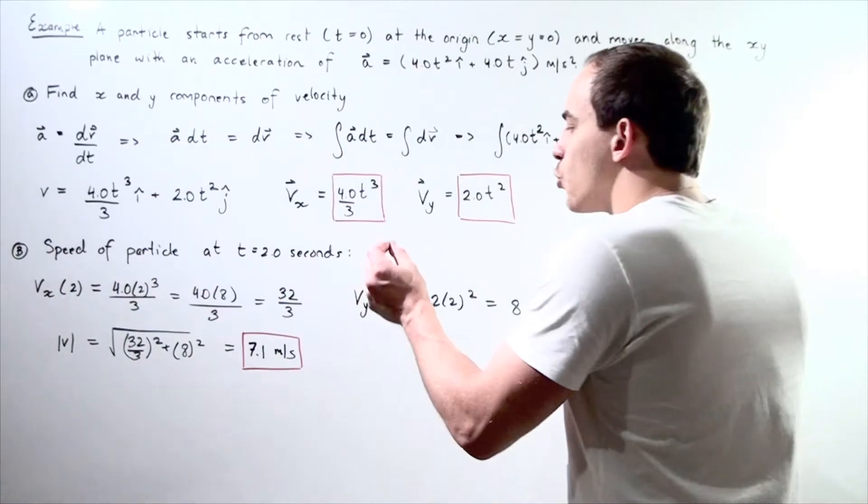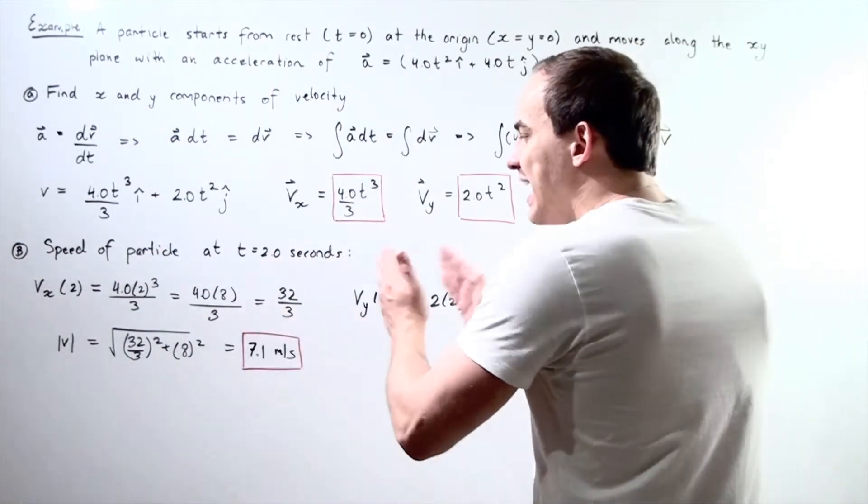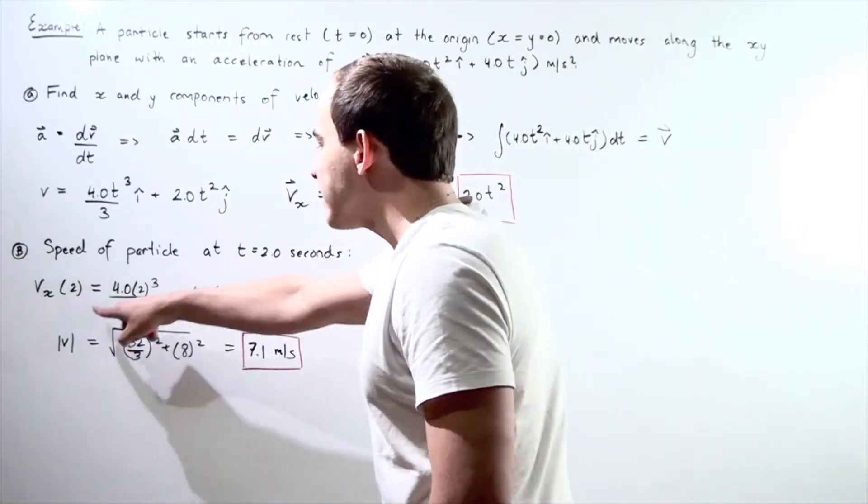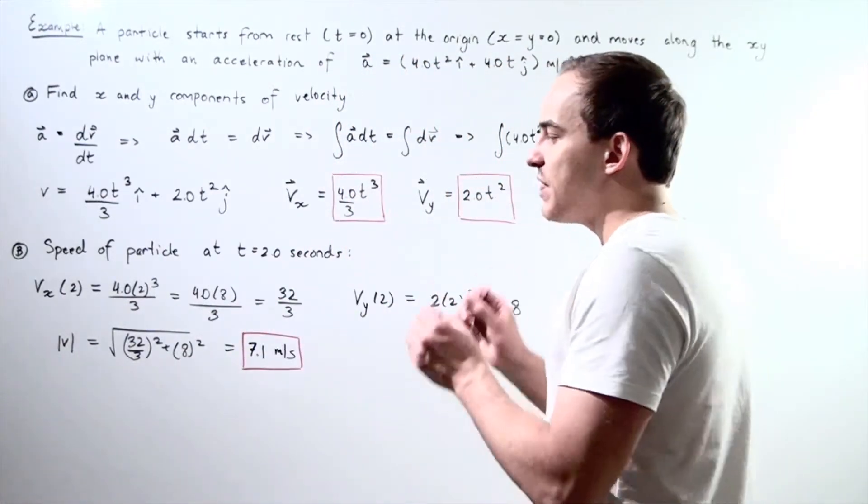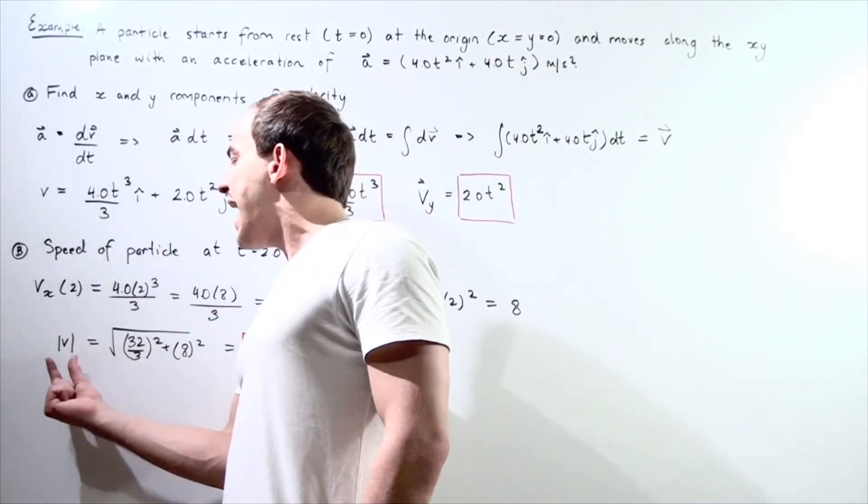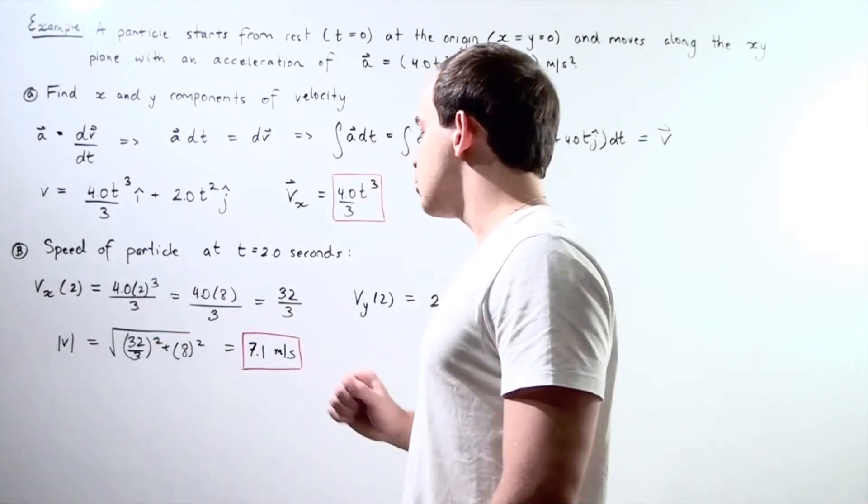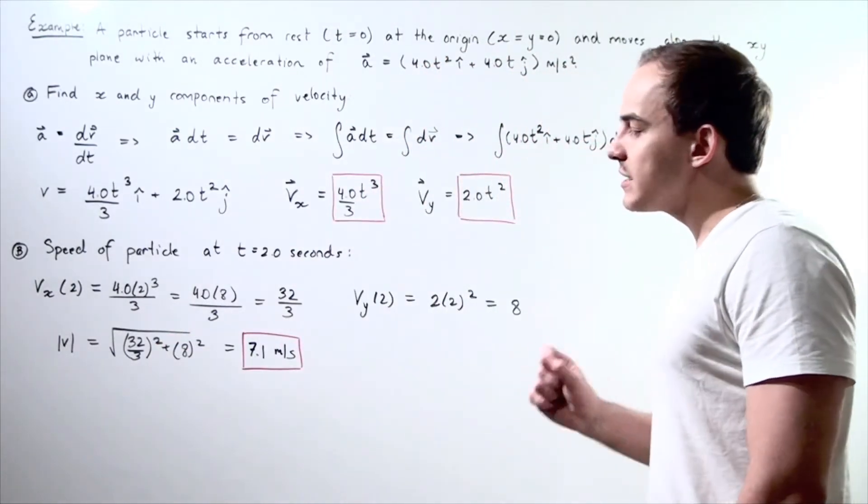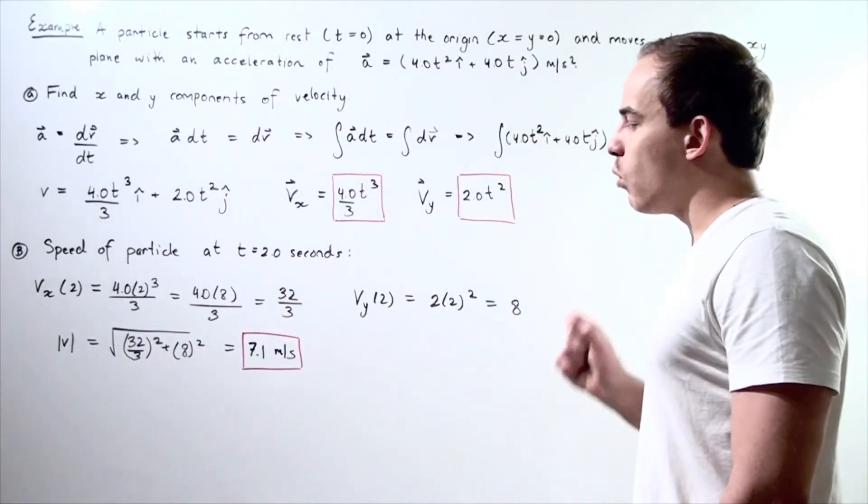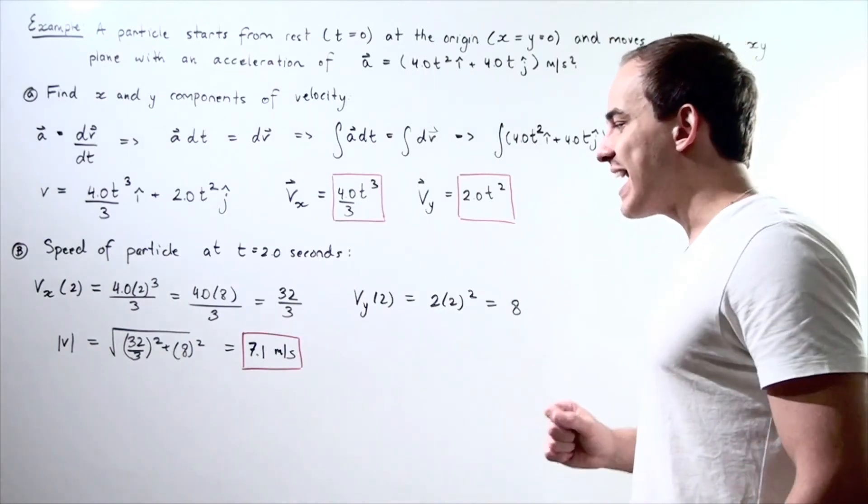I take the square of both of these values, I add them, and I take the radical of that sum. And that will give me the magnitude of my velocity at 2 seconds, which is approximately 7.1 meters per second.